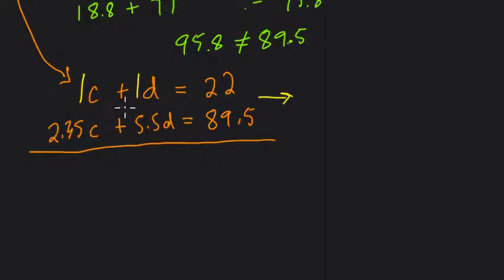So I'll multiply everything by negative 5.5. So I get negative 5.5 times 1 cat, or 1c, it's just negative 5.5c, plus negative 5.5d equals negative, don't forget that negative sign distributed, 121, otherwise this won't work.